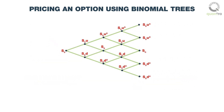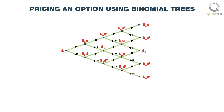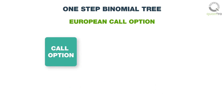At each step in the binomial tree, there is a defined probability of the underlying either moving up or moving down by a certain percentage amount. There could be many steps in the tree, depending on how complex a model we want to create. Let us start by looking at a simple one-step model, using an example of a European call option.